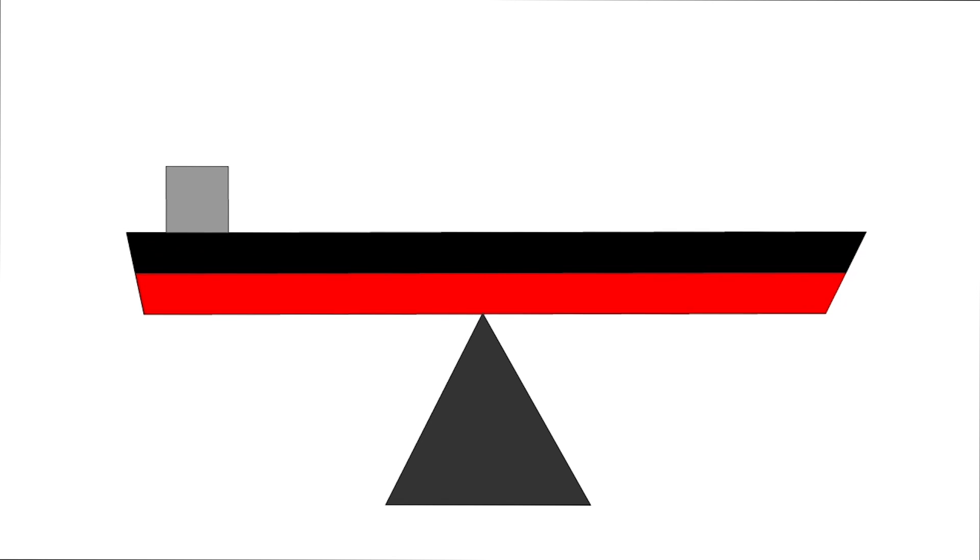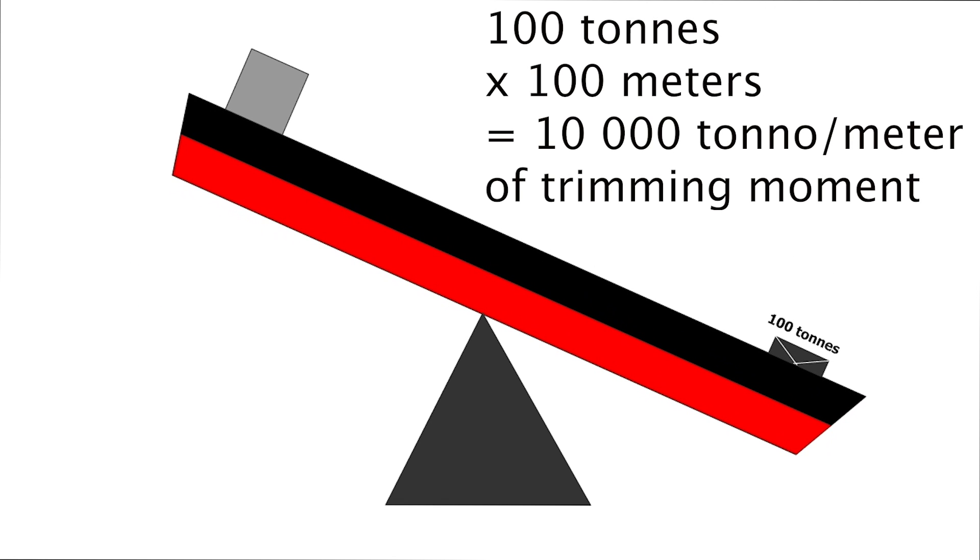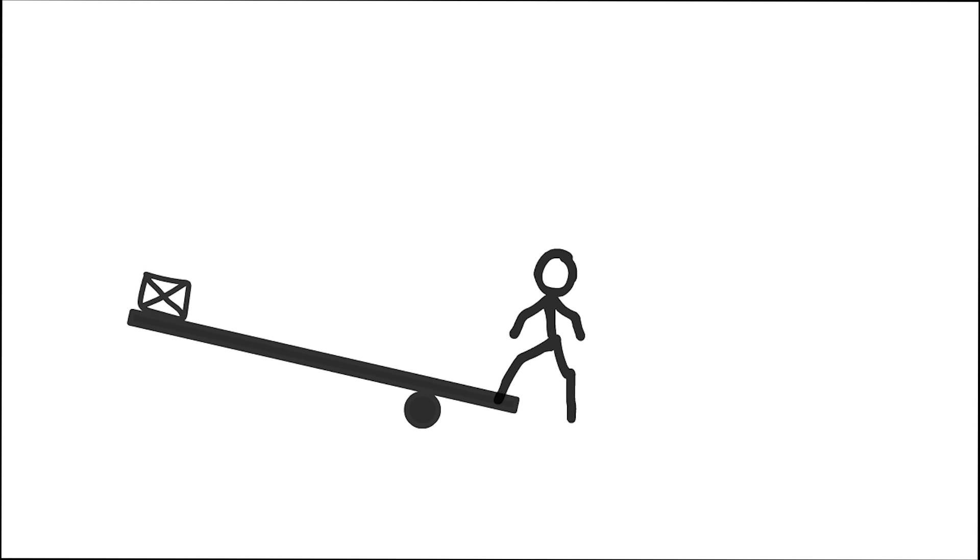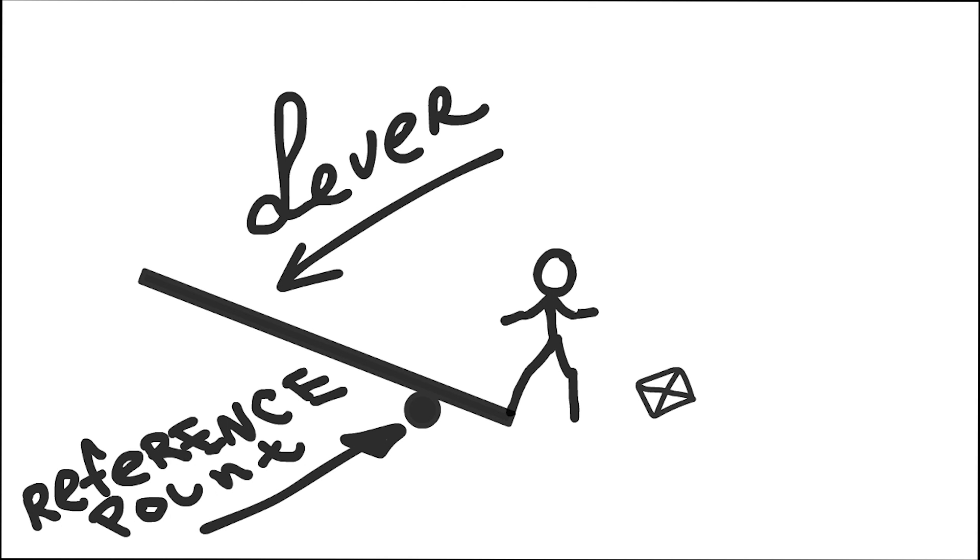If we load 100 tons at a distance of 100 meters from the middle, we multiply 100 tons by 100 meters, and the produced trimming moment will be equal to 10,000 ton-meters. The fixed cargo weight can create different trimming moments. Increasing the lever, which is the distance from the reference point, we are increasing the trimming moment, which is measured in ton-meters.